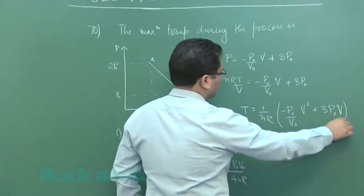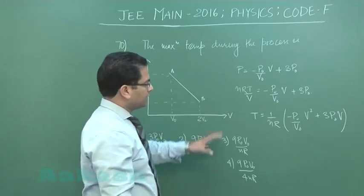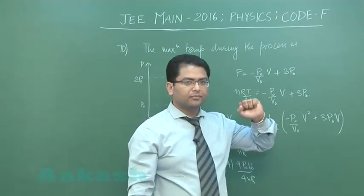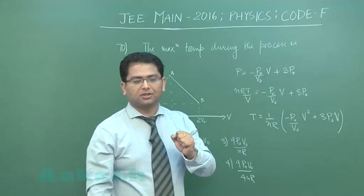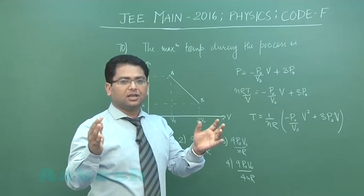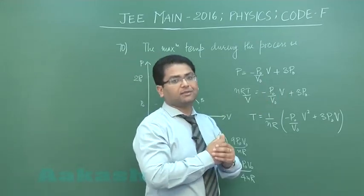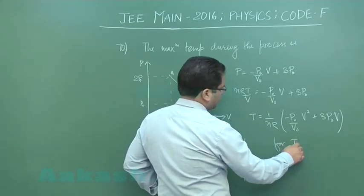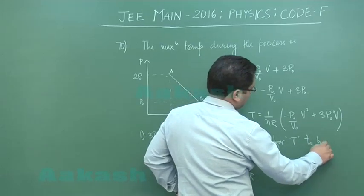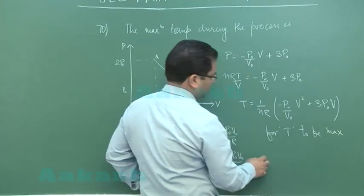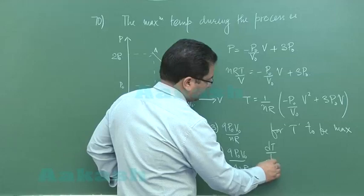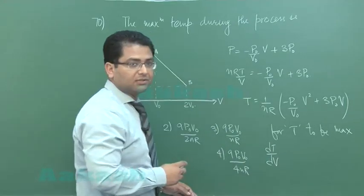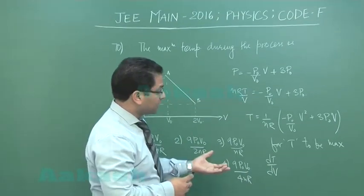I get T equals 1 by nR into minus P_naught by V_naught V squared plus 3P_naught times V. You could easily see here that the temperature-volume graph is a parabolic and a downward parabola. Somewhere a point comes where the temperature would be maximum. For temperature to be maximum, the first derivative, that's dT by dV, has to be equal to zero.